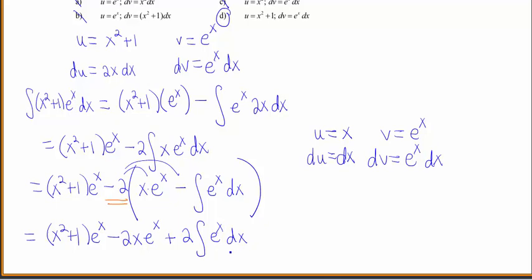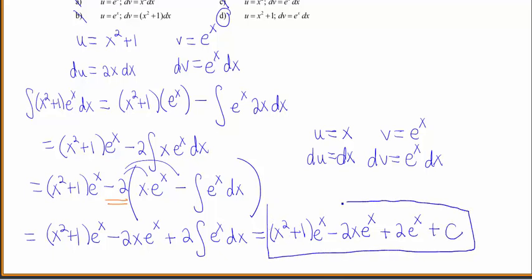Okay, so now I have a function that's easy to integrate, one of our straightforward functions. So now I can write down my answer. So that's x squared plus 1 e to the x, minus 2x e to the x, and then plus 2 e to the x, finally, plus c. So that is your final answer.